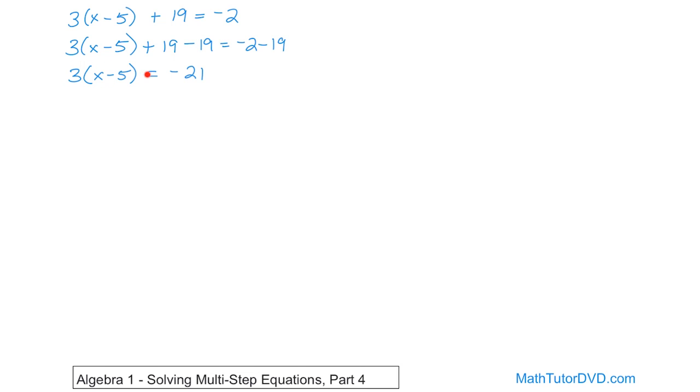If I try to deal with the 5, I'll try to add 5, but I won't be able to cancel him, because I've got the x minus 5 wrapped up in parentheses with a 3 multiplying, so it isn't going to do what I want if I try to deal with the 5.